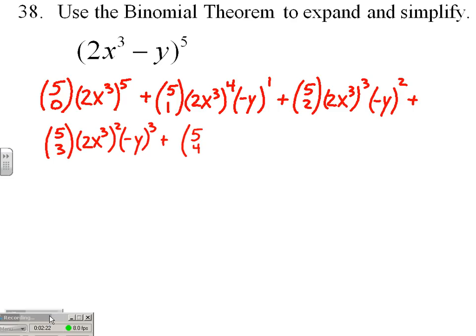Plus C5, 4. And 2x to the 3rds, down to just a single one of those. 2x to the 3rd, but 4 negative y's.